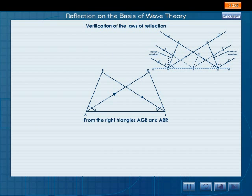From the right triangles AGR and ABR, sin I by sin R is equal to BR by AR divided by AG by AR, which equals BR by AG. Since BR is equal to AG, this equals 1.